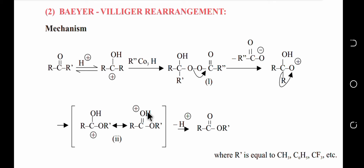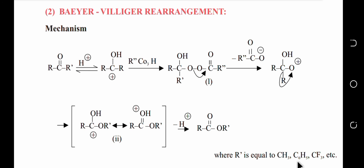After resonance stabilization, a second deprotonation occurs. The hydrogen is removed — the electrons in the O-H bond shift toward oxygen, making oxygen neutral and releasing a proton. This gives us the final product, which is an ester. The alkyl groups used in this mechanism can be CH₃, C₆H₅ (benzene/phenyl), CF₃, and so on.